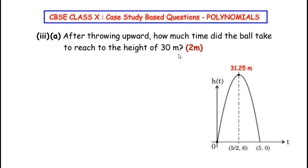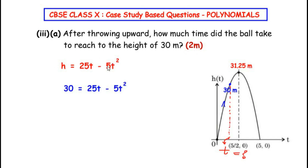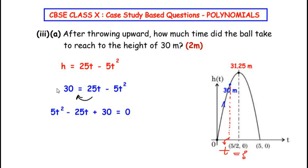The third sub question asks: after throwing the ball upward, how much time did it take to reach a height of 30 meters? The maximum height is 31.25 meters, so 30 meters is below that. We use the same polynomial equation. Since height is 30 meters, we substitute: 30 = 25t - 5t². Rearranging gives 5t² - 25t + 30 = 0.